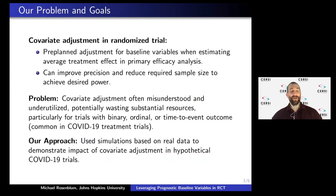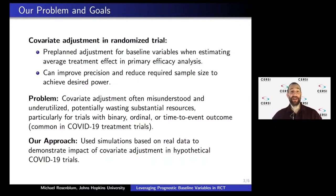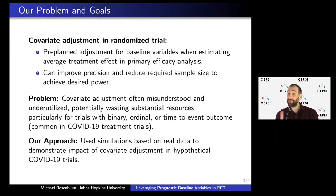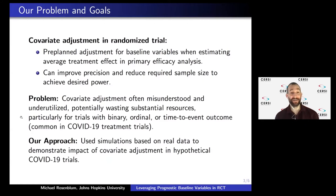Covariate adjustment is one of the statistical methods I'm most passionate about. In a randomized trial, it means pre-planned adjustment for baseline variables when estimating the average treatment effect in the primary efficacy analysis. If you have variables measured before randomization that are correlated with the outcome, you can improve precision and reduce the required sample size without sacrificing power, and it costs nothing.